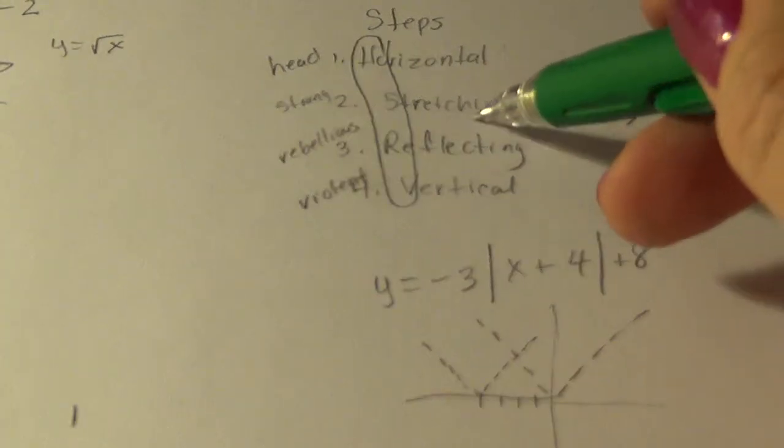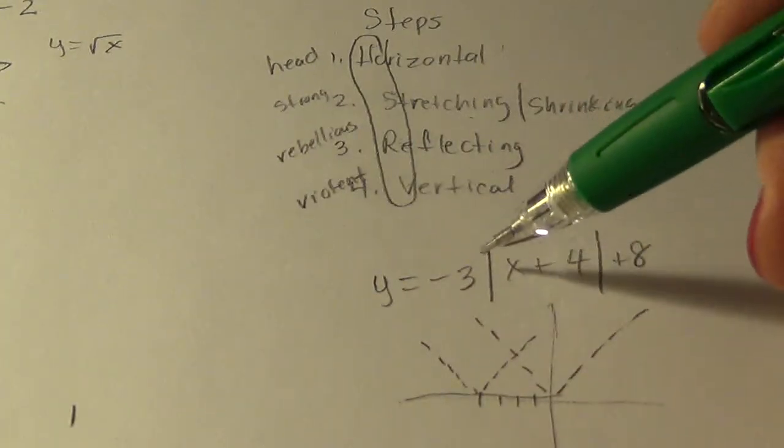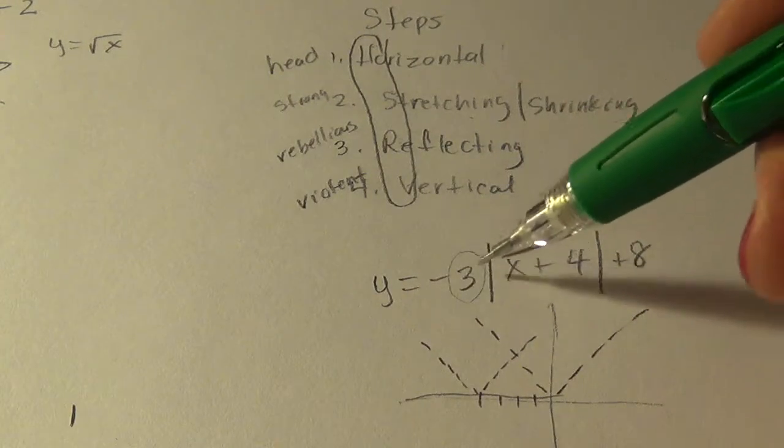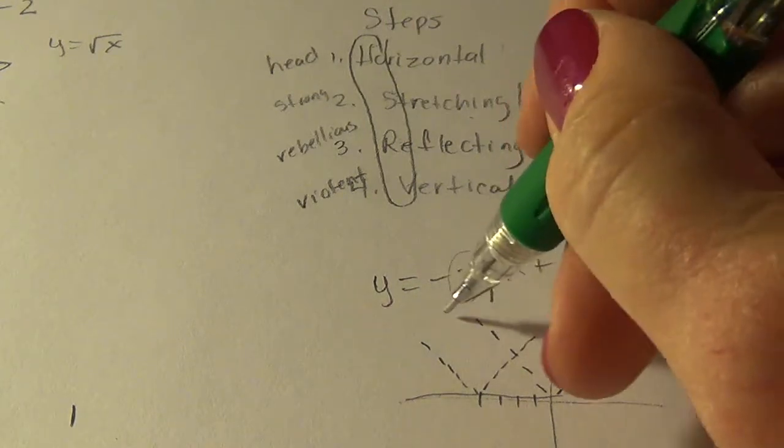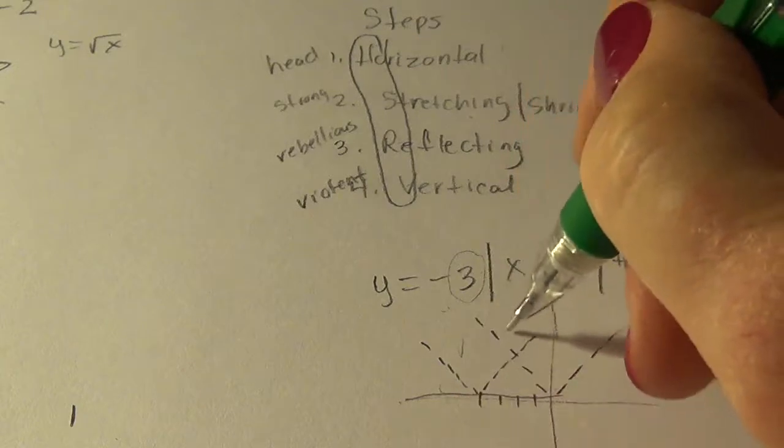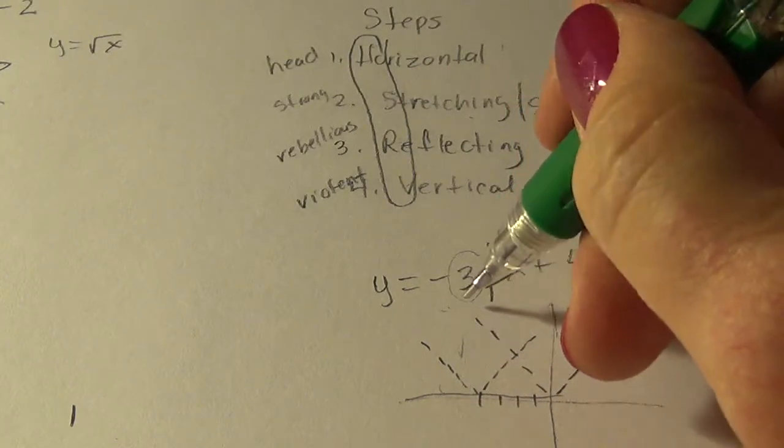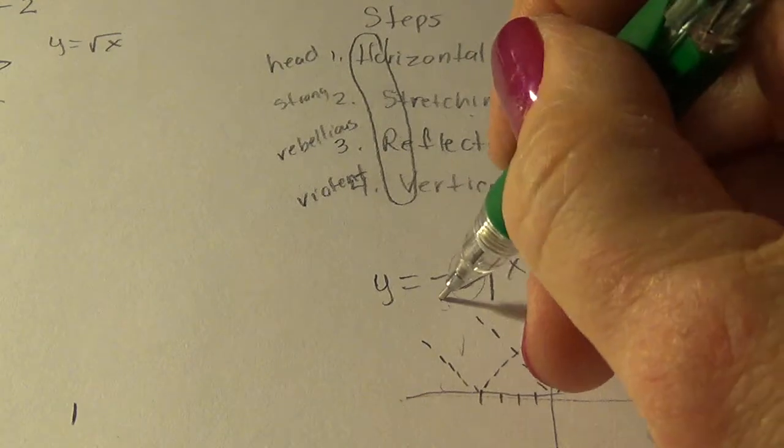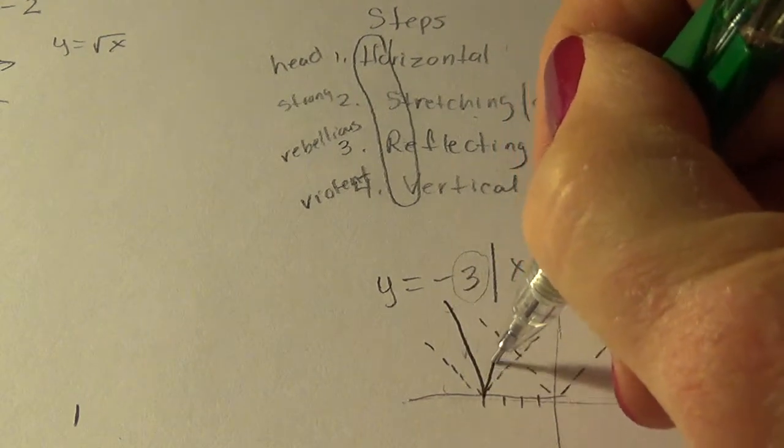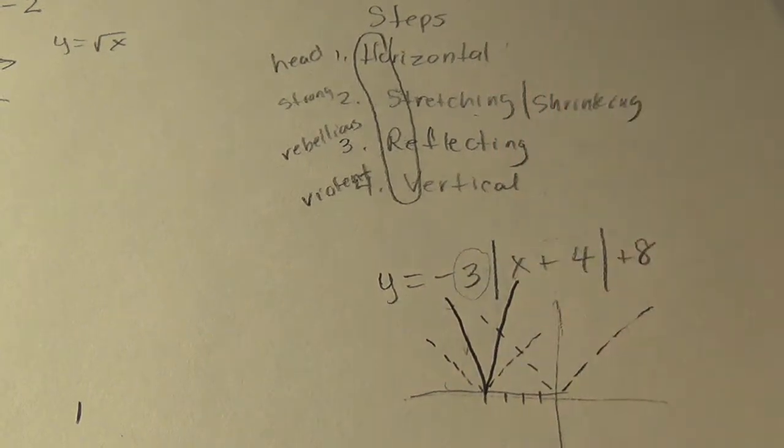Then we will do the shrinking or stretching. This number multiplied outside will cause a vertical stretch. So it's going to, if this was on a piece of stretchy paper and I pulled it stretching it vertically, it would squeeze this together by a factor of three.